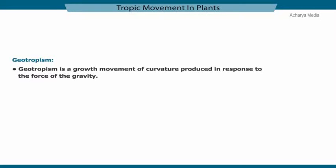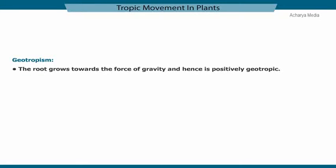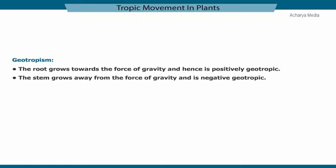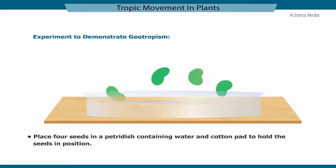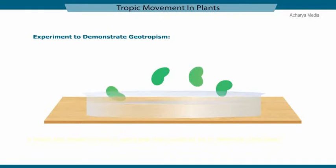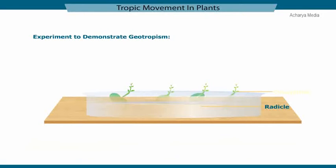Geotropism is a growth movement of curvature produced in response to the force of gravity. The root grows towards the force of gravity and is hence positively geotropic, while the stem grows away from the force of gravity and is negatively geotropic. In an experiment to demonstrate geotropism, four seeds are placed in a petri dish containing water and a cotton pad to hold the seeds, with their radicles pointing in different directions. After a few days, irrespective of their positions, the radicles of all seeds always grow downwards while the coleoptiles grow upwards.